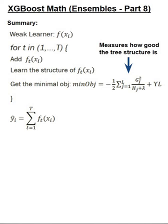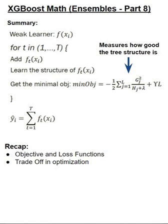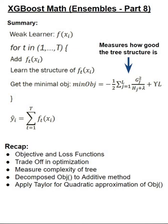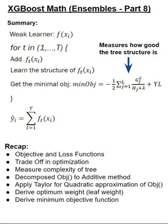Now that's the overall overview of the summary and now let's quickly review and recap everything we've covered in this video. First we saw the basic general objective function and the squared loss function. Then we understood the trade-off optimization built into this function. We reviewed the measure of complexity of the tree. We decomposed the objective function to additive method. Then we applied a Taylor approximation for a quadratic approximation of the objective function. Then we derived the optimal weight and also the minimum objective function which was the most simplified objective approximation that we could get from our general objective function. Then finally we reviewed how the structure is being learned or the tree is being built.